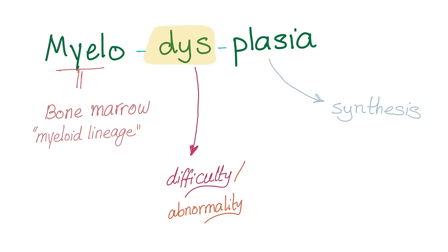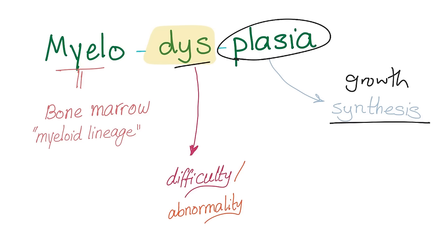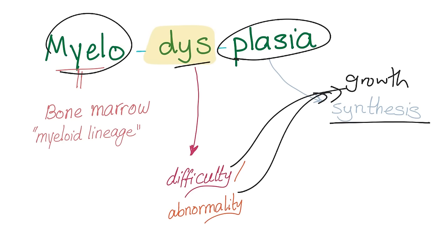Myeloid dysplasia — the name has the answer. What does dysplasia mean? Difficulty of growth, abnormality of growth. Myelo generally means the bone marrow — specifically, the myeloid lineage of the bone marrow. So here we have myelodysplasia: problems of maturation in the bone marrow, especially the myeloid lineage.